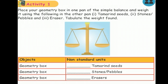One side we use geometry box and another side we use tamarind seeds, stones or pebbles, and eraser. If you put the tamarind seeds inside, it makes the balance. Then you write how many tamarind seeds you put, how many stones you put, how many erasers you put. So you write the answer here. This is Activity 1 for you.